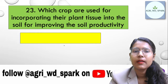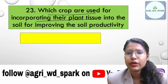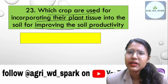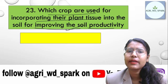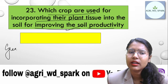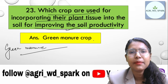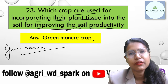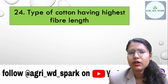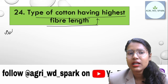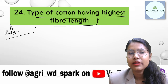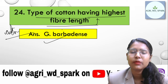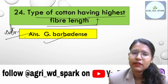Some crops are generally incorporated into plant tissue to improve soil productivity. Regarding fiber length, the species with the highest fiber length is Gossypium barbadense — compared to species like arboreum or hirsutum, barbadense has the greatest fiber length.